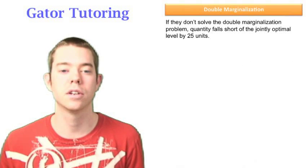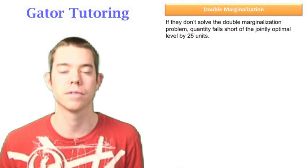The next question says, if they don't solve the double marginalization problem, quantity falls short of the jointly optimal level by 25 units.